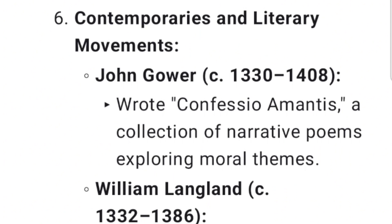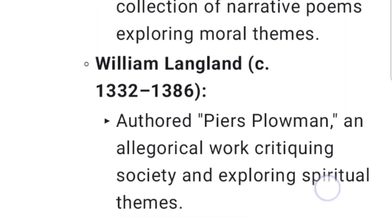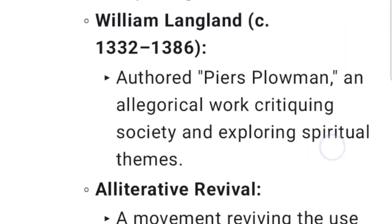Contemporaries and Literary Movements: John Gower (c. 1330–1408) wrote Confessio Amantis, a collection of narrative poems exploring moral themes. William Langland (c. 1332–1386) authored Piers Plowman, an allegorical work critiquing society and exploring spiritual themes.